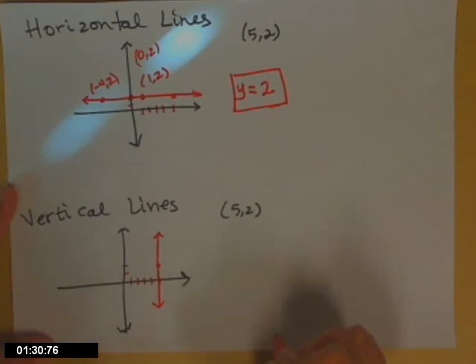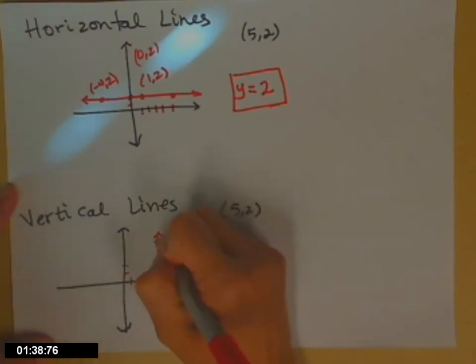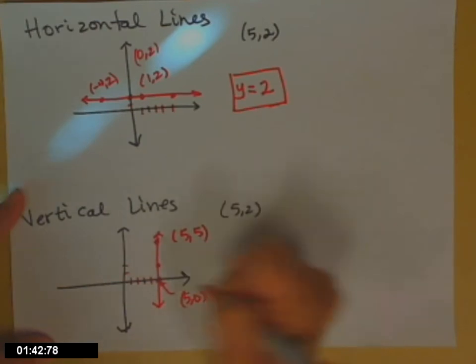And now we're going to find other points on that line. What's that x-intercept there? (5, 0). How about a line up here? Oh, maybe that's (5, 5). Okay, this one over here was (5, 2) that we started with.